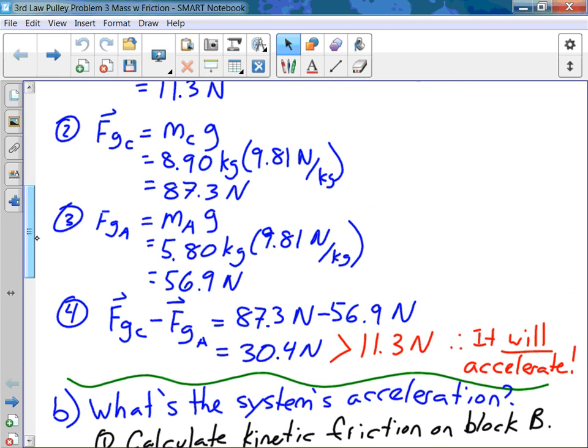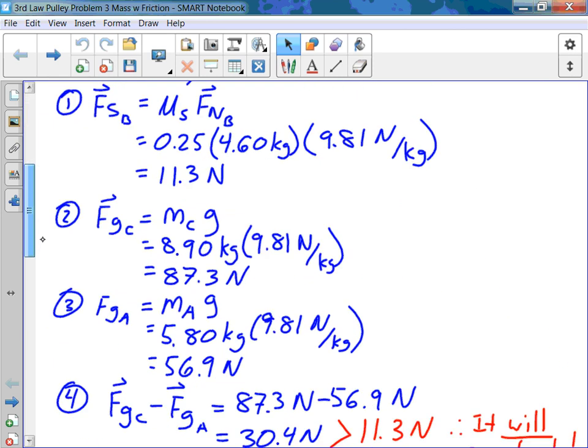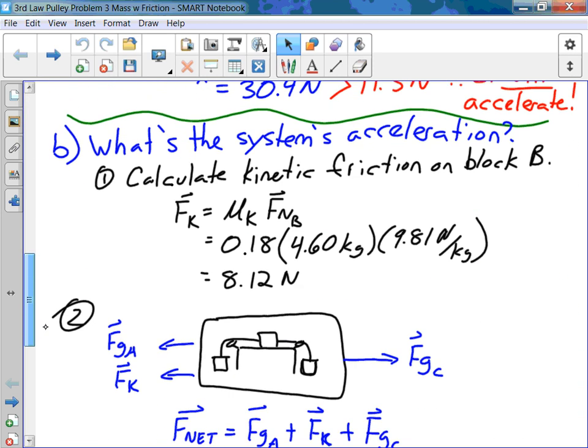And we figured out that when we compared the difference in the forces of gravity, where was that free body diagram that we did? The force of gravity from block C, when you subtract from that force of gravity from block A and the static friction, it was still greater. So we figured out that the system was going to accelerate to the right.